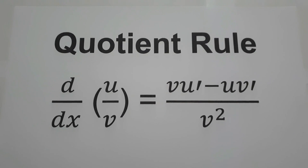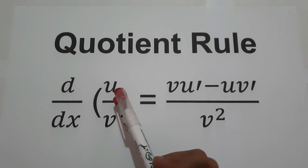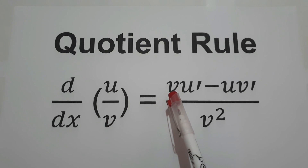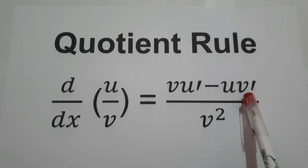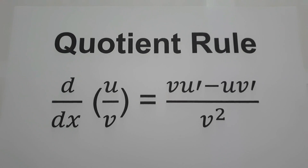For today's video, we are going to discuss how to find the derivatives of a function using the quotient rule. We are going to use the formula: the derivative of u over v, that is v·u' minus u·v', all over v squared. This is the formula we will use to find the derivative of a function using quotient rule.